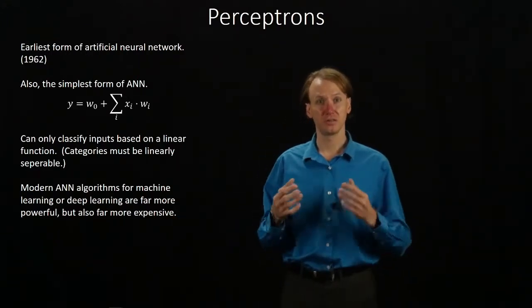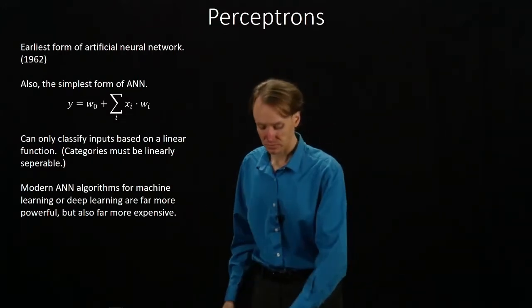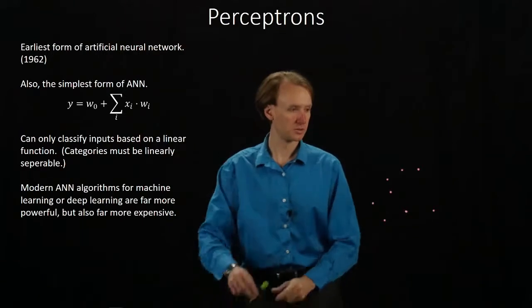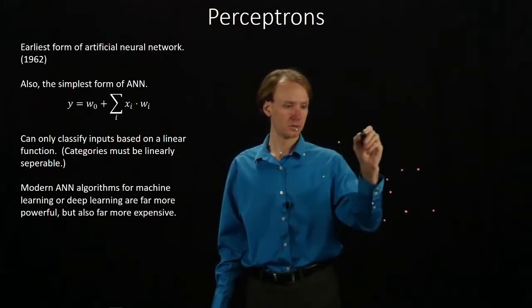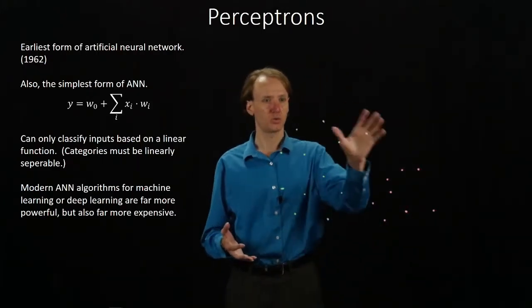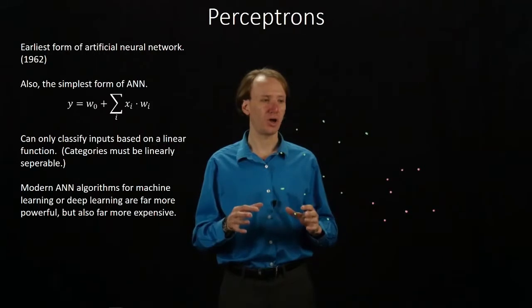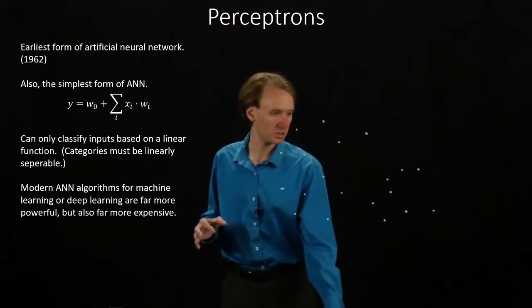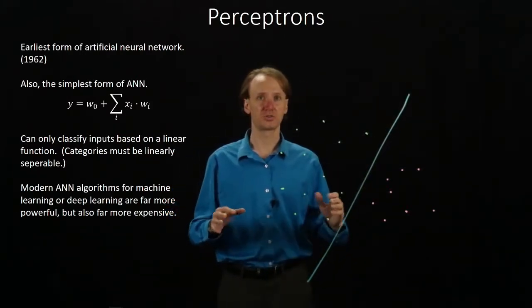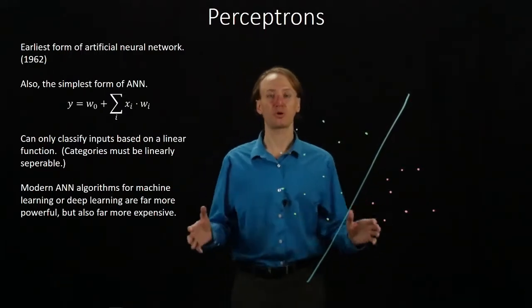But unfortunately, the simplicity also means that they're really limited in how they can do classification. If I have a series of points, and I'd like to be able to classify them and say that green ones fall in one category, pink ones fall in another one, I need to be able to find a single line that can separate these two categories. It needs to be one nice straight line. And if we're capable of finding a straight line that accomplishes this task, then a perceptron will work just fine.